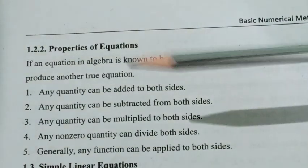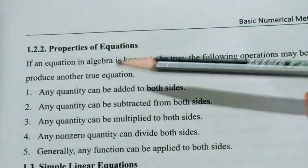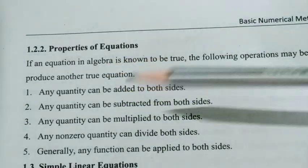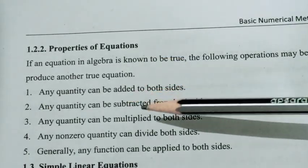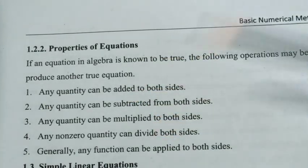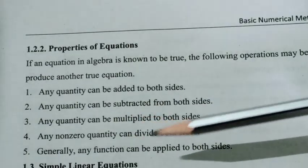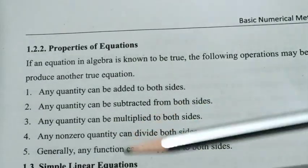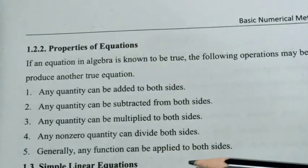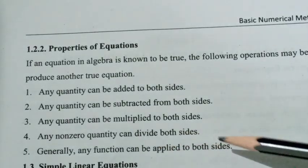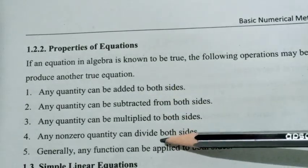The properties of equations are: any quantity can be added to both sides; we can subtract from both sides; we can multiply both sides; and we can divide both sides by a non-zero quantity. We can apply these different properties to solve equations.